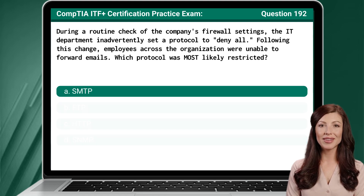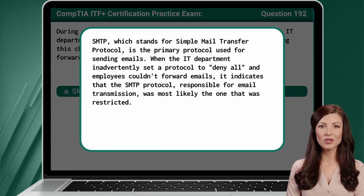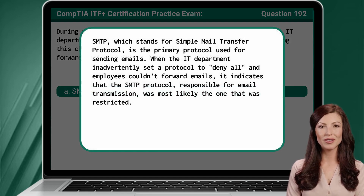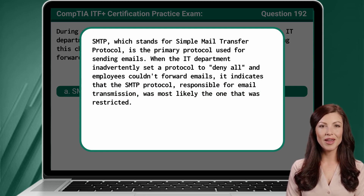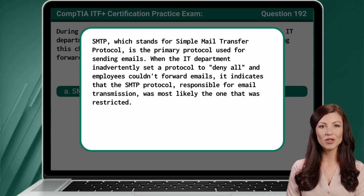The answer is A: SMTP, which stands for Simple Mail Transfer Protocol, is the primary protocol used for sending emails. When the IT department inadvertently set a protocol to deny all and employees couldn't forward emails, it indicates that the SMTP protocol, responsible for email transmission, was most likely the one that was restricted.